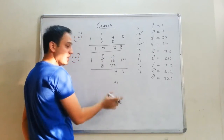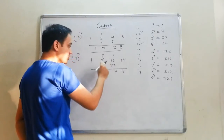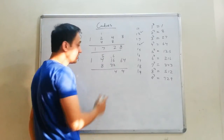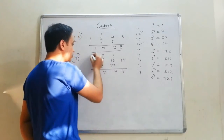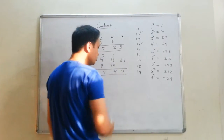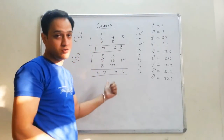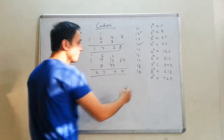Carry 1 forward: 3 plus 4 is 5. Here the answer is actually 54 — I'll write only 4, carry 5. So 8 plus 5 is 13, plus 4 is 17. Write 7, carry 1, plus 1 is 2. The answer is 2, 7, 4, 4.